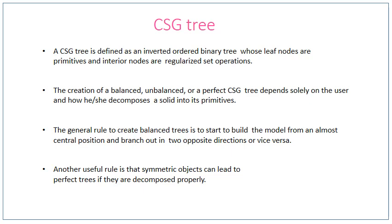The general rule to create a balanced tree is to start building the model from an almost central position and branch out in two opposite directions — like a physical balance. A balanced CSG tree should be equal on both the left-hand side and the right-hand side. Another useful rule is that symmetric objects can lead to perfect trees if decomposed properly, where the end product is cut down into operations and then into primitives on both sides equally.